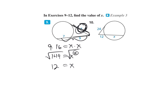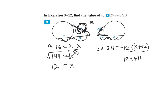Number 10: the part 24 times the whole piece 24 equals the part 12 times the whole piece X plus 12. Distribute: 12X plus 144. And 24 times 24 equals 576. Subtract 144 from 576 to get 432. Divide by 12, and X equals 36.